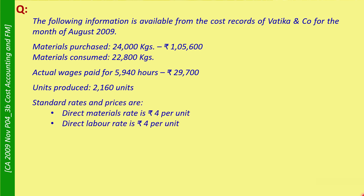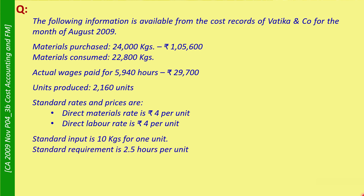Standard rates and prices are: direct materials at the rate of Rs. 4 per unit, direct labour at the rate of Rs. 4 per unit. Standard input is 10 kilograms for 1 unit. Standard requirement is 2.5 hours per unit.